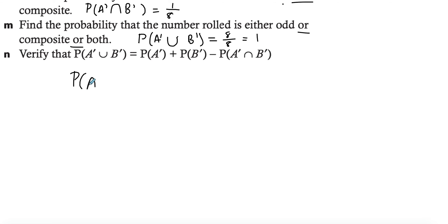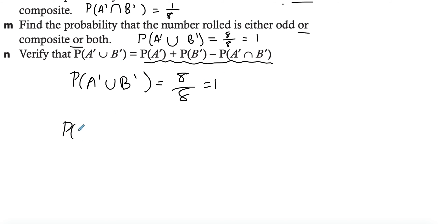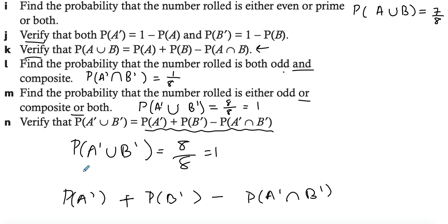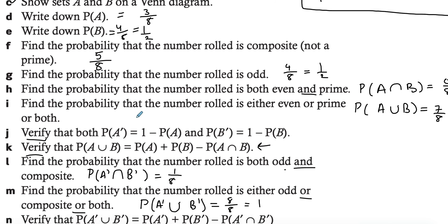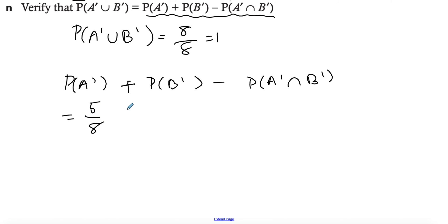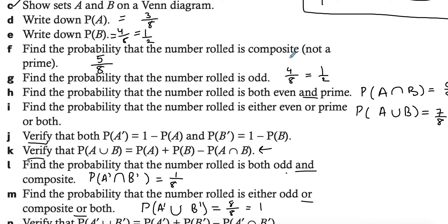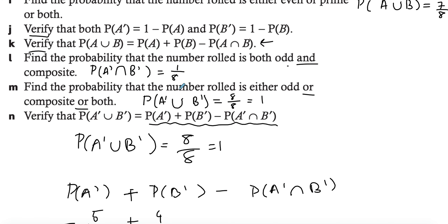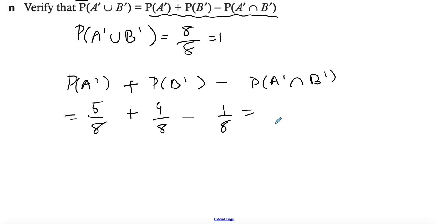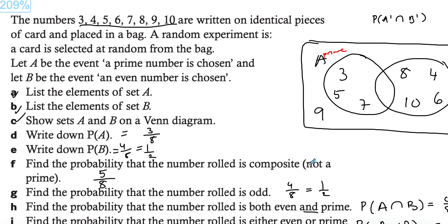To verify: P(A prime union B prime) is eight over eight, which is one. Using the rule: P(A prime) + P(B prime) − P(A prime intersect B prime). P(A prime) — composite — is five over eight; P(B prime) — odd — is four over eight; and the intersection is one over eight. So five over eight plus four over eight minus one over eight equals nine over eight minus one over eight, which is eight over eight — equal to one. Verified.